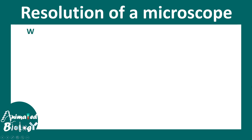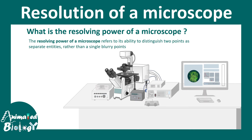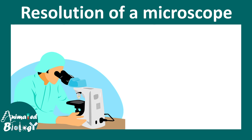In this video we will talk about the resolution of a microscope. The resolving power of any microscope or any optical element refers to the ability to distinguish between two points as separate entities rather than a blurry point. Imagine two points clearly separated — they are resolved. Two points placed very close can still be resolved, but beyond a limit we can't say whether there are two individual points or one, and at that point it's not resolved. This capability is known as the resolving power of a microscope.